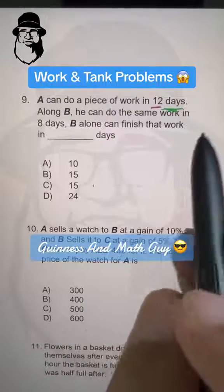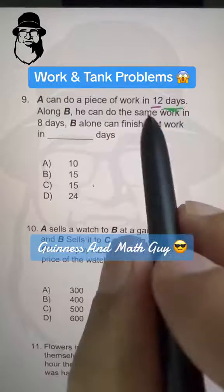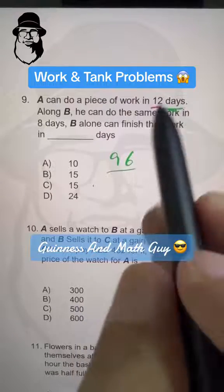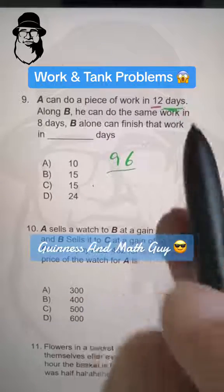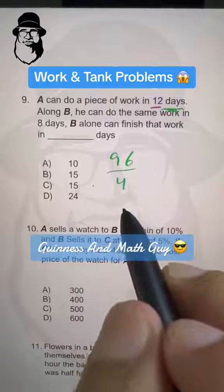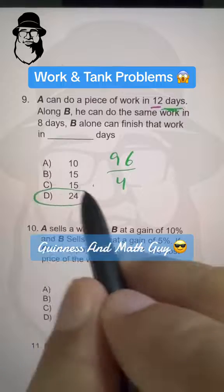We just multiply them. 12 times 8 is 96 and divide by the difference. 12 minus 8 is 4. So 96 divided by 4 is 24. That's our answer.